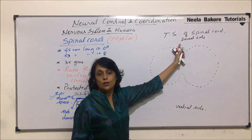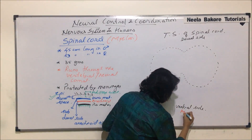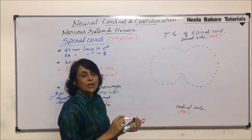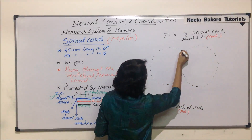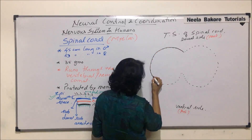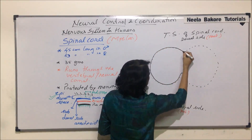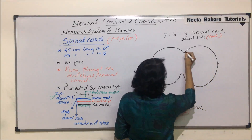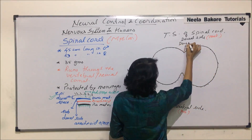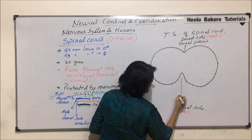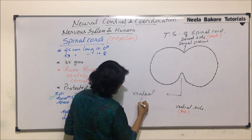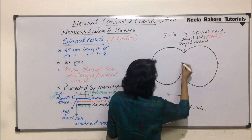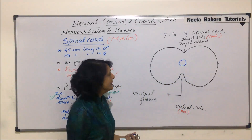The dorsal side is also termed as the posterior side, and the ventral side is also termed as the anterior side. These depressions are known as dorsal and ventral fissures. The dorsal fissure is not deep, and this depression is the dorsal fissure while this one is the ventral fissure. In the center there is a canal or cavity known as the central canal.